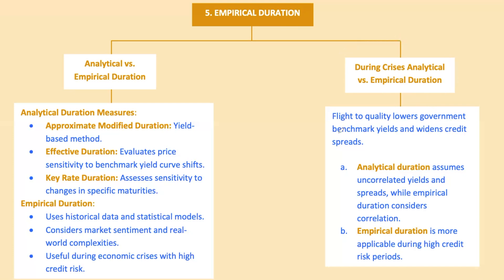Consider the 2020 COVID-19 pandemic: bond markets went volatile, investors flocked to the safety of government bonds pushing yields down, while credit spreads blew up reflecting heightened credit risk. In these scenarios, using just analytical duration would be like navigating with an outdated map — you'd miss the changes in the relationship between government bond yields and credit spreads. Instead, you need empirical duration to account for these shifts. Analytical duration gives you a ballpark, but empirical duration gets you closer to home in volatile markets. If you're working with high credit risk bonds, empirical is the way to go.